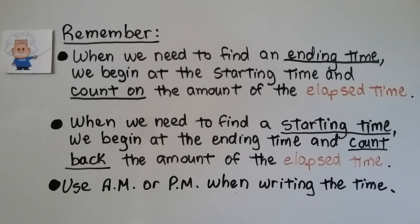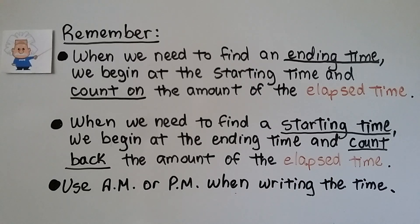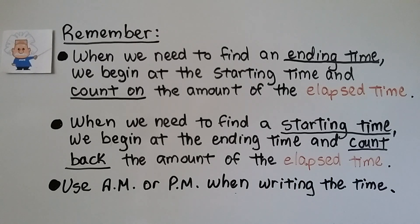Remember: when we need to find an ending time, we begin at the starting time and count on the amount of elapsed time — we count forward. When we need to find a starting time, we begin at the ending time and count back the amount of elapsed time — we go toward the left. And remember to use a.m. or p.m. when writing the times.